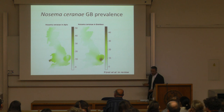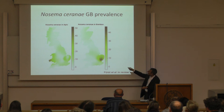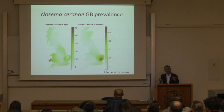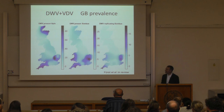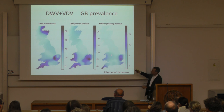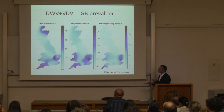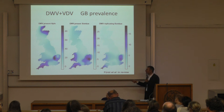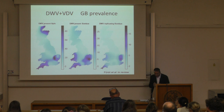The distribution of DWV/VDV in honeybees across Britain shows a surprisingly similar pattern to its distribution in bumblebees, and the distribution of replicating virus shows a strong statistical association between honeybee and bumblebee prevalence at the same sites — suggesting they may be sharing pathogens. Sequencing variants of DWV and VDV in honeybees and bumblebees from several locations shows that in some locations honeybees and bumblebees share the same sequence variant. This is pretty good evidence of ongoing transfer of viruses between species, though we can't tell the direction.